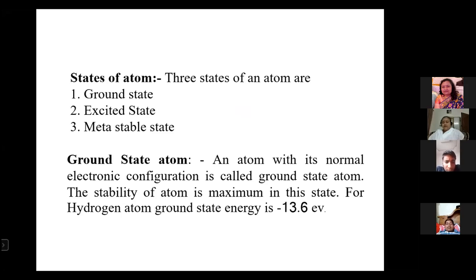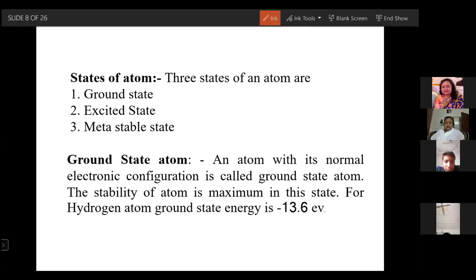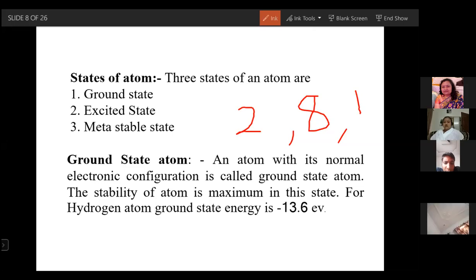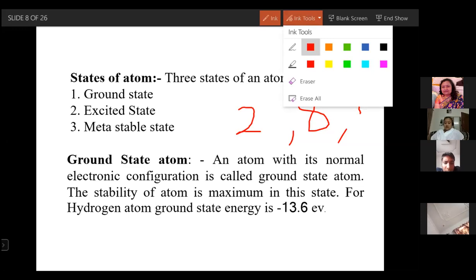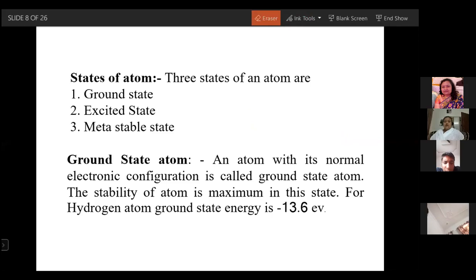To understand population inversion, you have to understand some things first. Any atom exists in three states. The first state is the ground state, where the electronic configuration is the normal electronic configuration. For example, if an atom has 11 electrons, the electronic configuration is 2, 8, 1. If an atom exists with this normal electronic configuration, it is called a ground state atom, and the energy is called ground state energy. For hydrogen, the ground state energy is minus 13.6 electron volts. Any atom is most stable in this ground state.